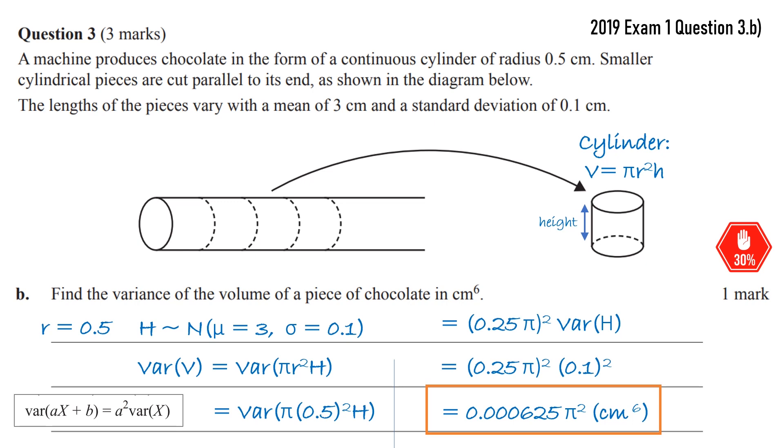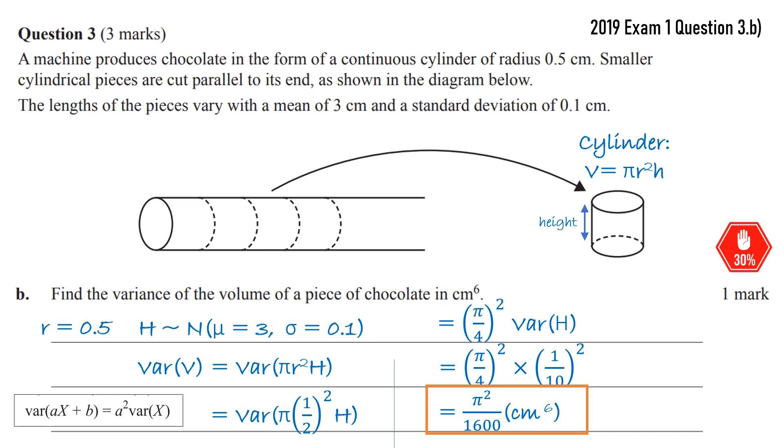Actually this question is easier to work out using fractions. So I'll show how that would look if we use fractions. So the 0.5 becomes a half. So we would have pi over 4. When we square that we would get pi squared over 16. And we're multiplying by 0.1 squared which is 1 over 100. So we'll get pi squared over 1600. So yeah, it turned out to be easy using fractions because we're squaring things. Fractions, we just square the top, square the bottom. It's generally a bit easier than working with decimals.